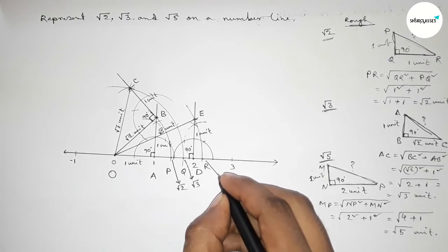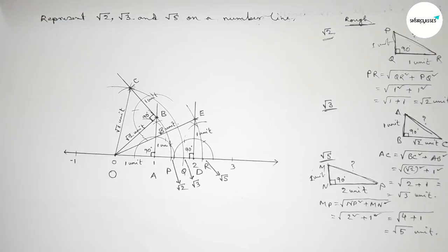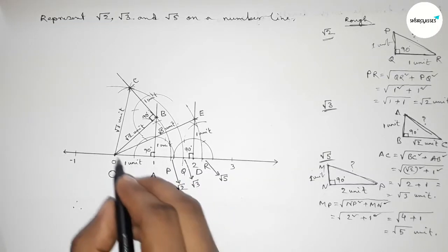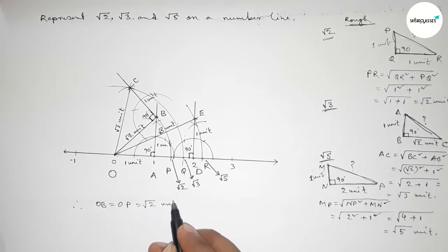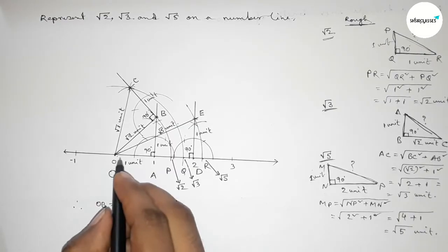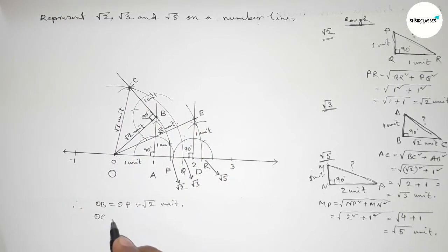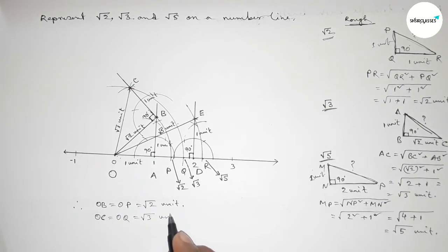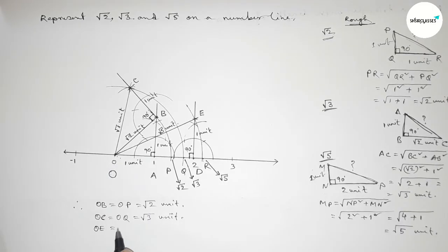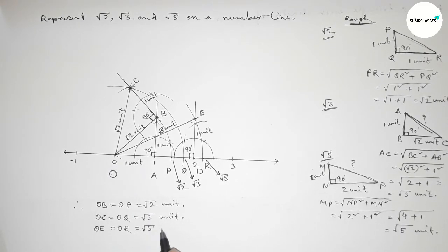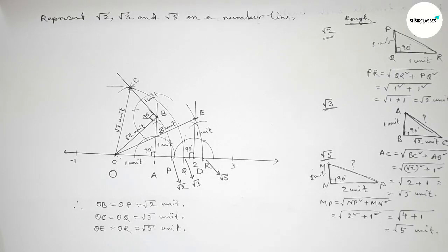Therefore, OP equals OB equals root 2 unit; OQ equals OC equals root 3 unit; and OR equals OE equals root 5 unit. That's all. Thanks for watching. If this video is helpful to you, please share it with your friends.